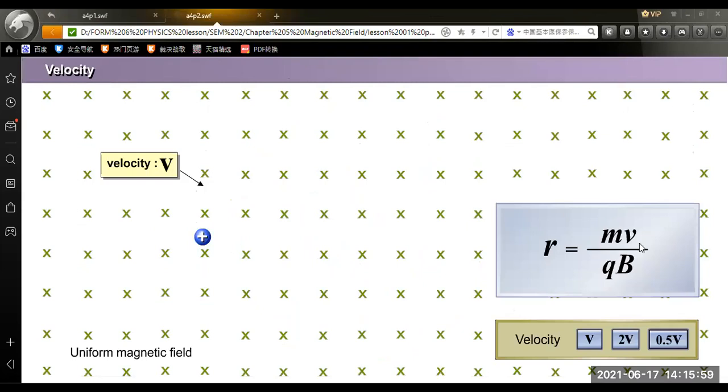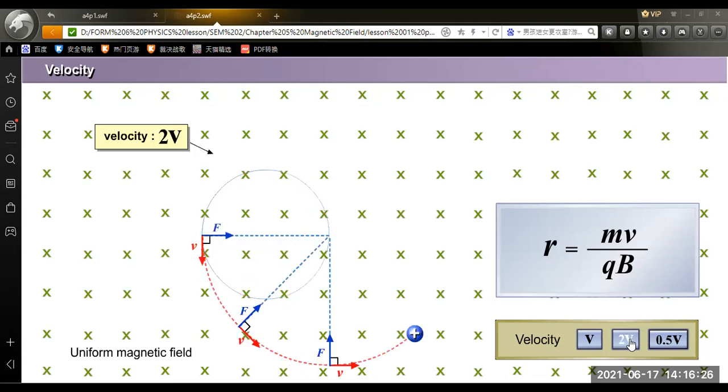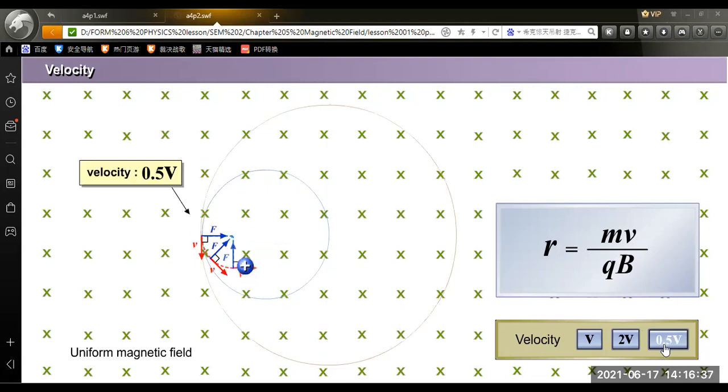Now we observe that there is still a uniform magnetic field which is into the screen. A positive charge now is moved with a velocity of V. Now, r is directly proportional to V. Once V increases to 2V, this means that the radius will become double. If reduced to half, this means that the radius will become smaller.